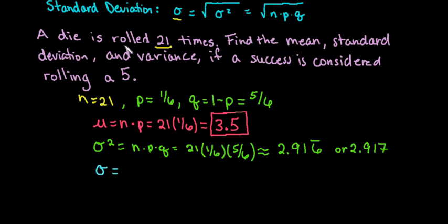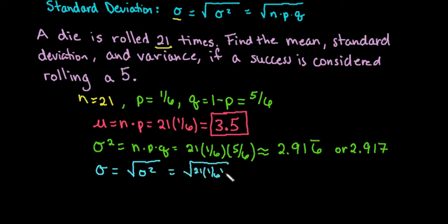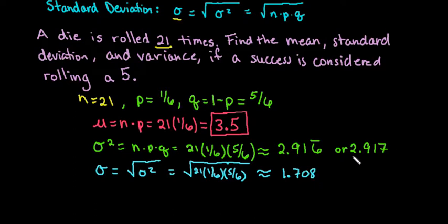The standard deviation is found by taking the square root of the variance, so we take the square root of 21 times 1 sixth times 5 sixths. In your calculator, just take the square root of your answer. This is approximately 1.708 to three decimal places.